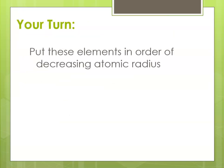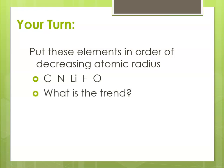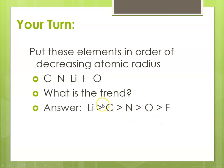Now let's try one: put these elements in order of decreasing atomic radius, starting with the largest and going to the smallest. The elements are carbon, nitrogen, lithium, fluorine, and oxygen. Atomic radius decreases from left to right across a period, and these elements are all in the same period. So putting them in order of decreasing size, lithium would be the largest and fluorine would be the smallest.